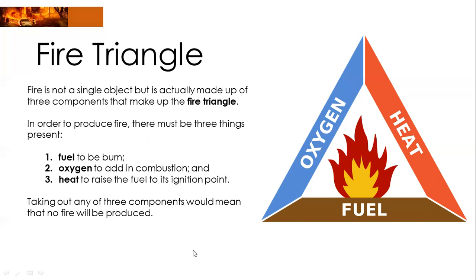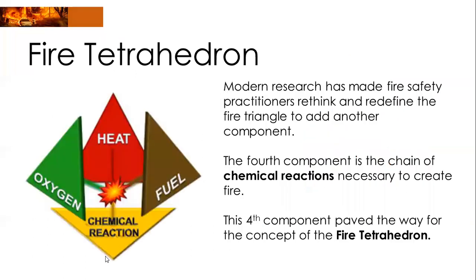After the fire triangle, through several studies and researches, there's another component that was added, making this the fire tetrahedron. The fourth component added to the three is what we call chemical reaction. According to the fire tetrahedron, in order for fire to occur, all four must be present: chemical reaction, oxygen, heat, and fuel.